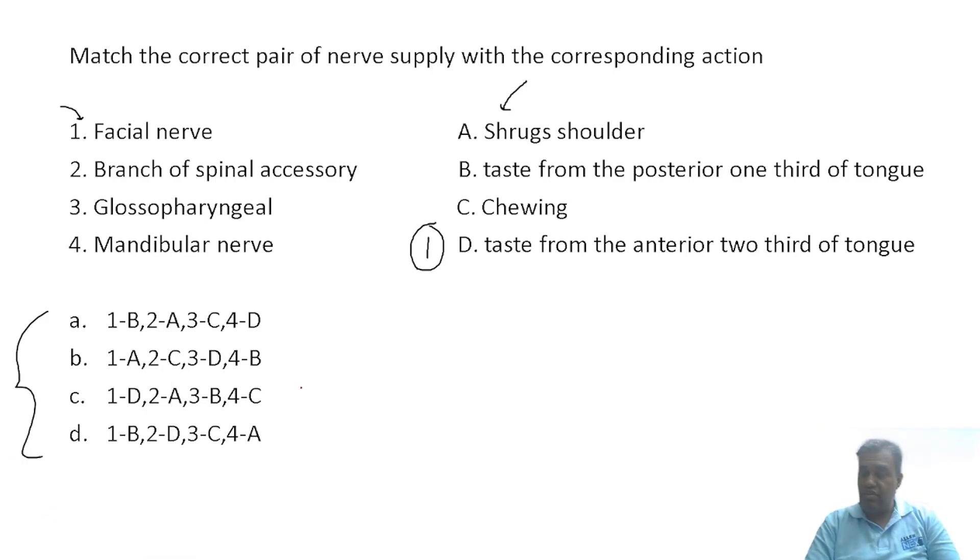Second is branch of spinal accessory. The spinal accessory comes out from the jugular foramen and then goes posteriorly supplying both sternocleidomastoid and trapezius. The spinal accessory has only motor function to supply SCM and trapezius, so yes, it involves in shrugging of shoulders. That is option 2.